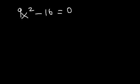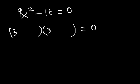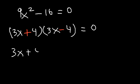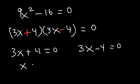What if we have a number in front of x squared? Let's say 9x squared minus 16. Notice that 9x squared is a perfect square, so we can factor it. The square root of 9 is 3, the square root of x squared is x, so the square root of 9x squared is 3x. The square root of 16 is 4, and then it's going to be plus and minus. So we have 3x plus 4 equals 0 and 3x minus 4 equals 0. Therefore, x is going to equal negative 4 divided by 3, and also positive 4 divided by 3.